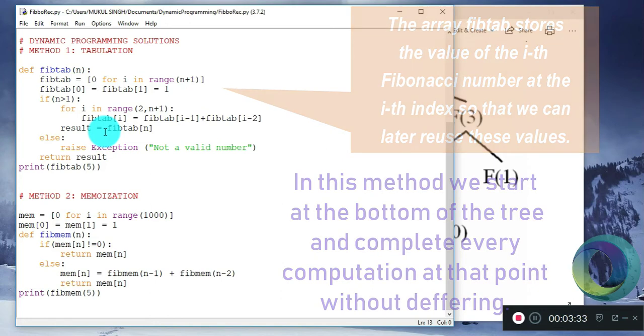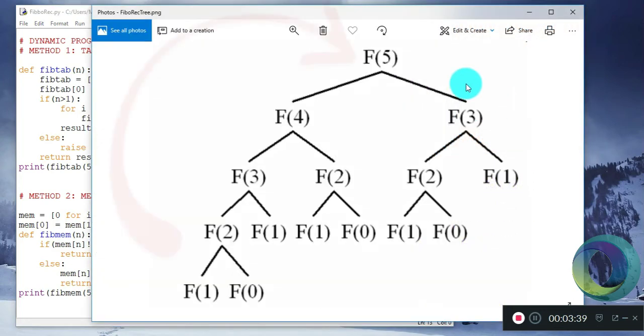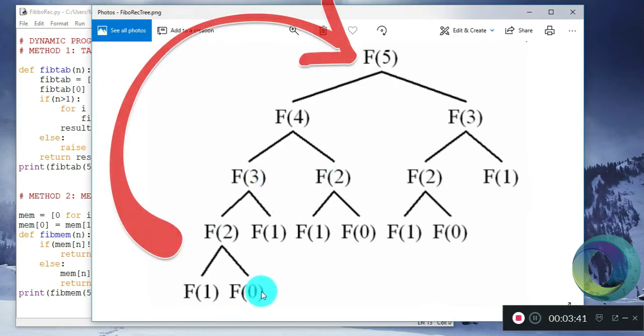Why this is better than the tree method is because we are computing F of 2, then F of 3, then F of 4, then F of 5. So no computation is being repeated. Everything is being computed once, hence it improves the time complexity.